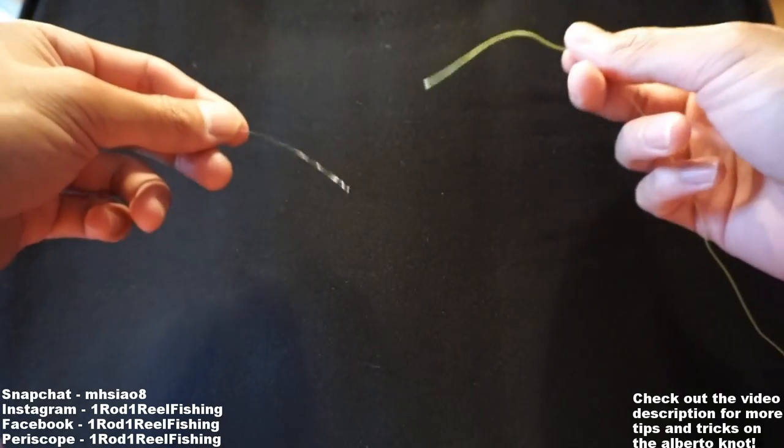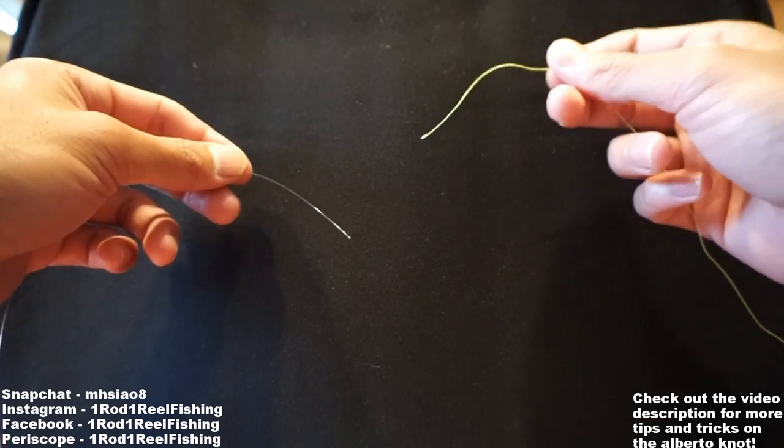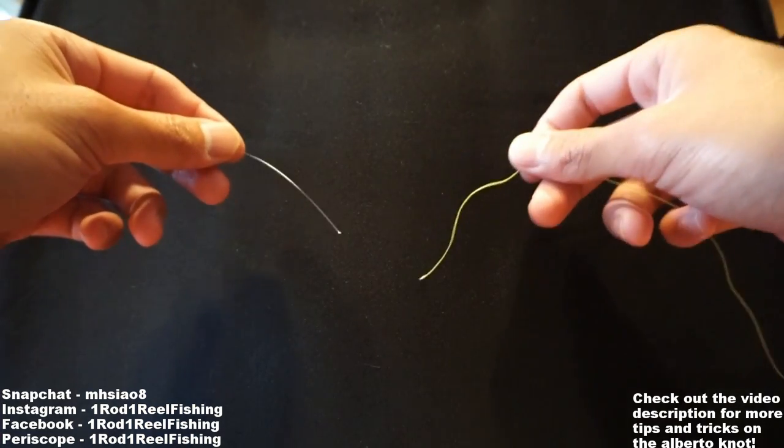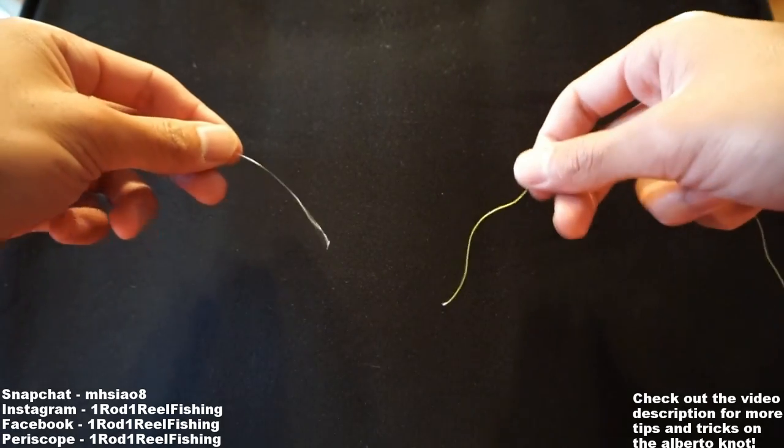I've used lots of different knots, the FG knot, Uni to Uni knot, and a couple others, but the Albright knot is the best in terms of ease of tying it, knot strength, and it goes through guides really well. Let's get into it.